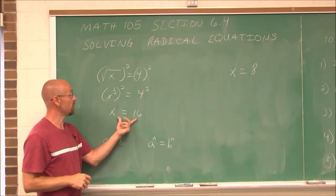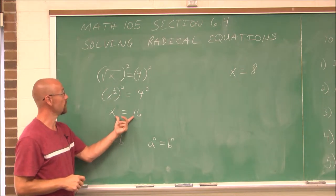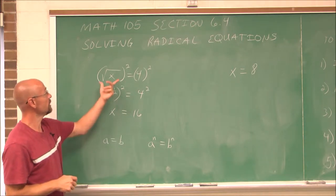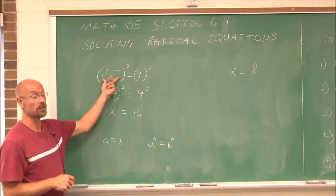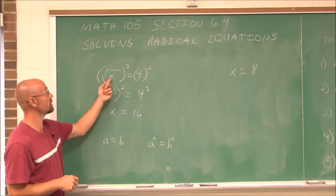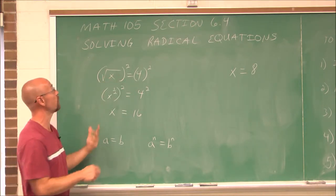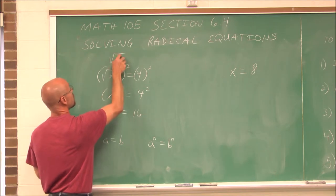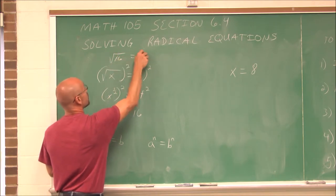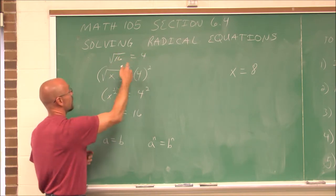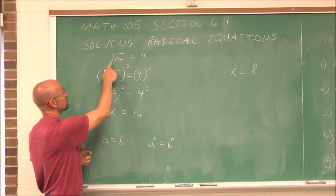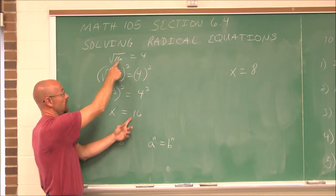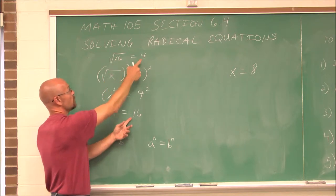Now that we've solved that, we can check it. The square root of 16 is 4. Our original equation was the square root of x equals 4, so the square root of 16, our solution, equals 4.